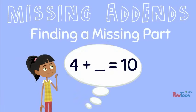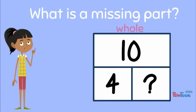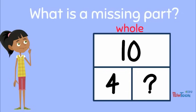Missing addends: finding a missing part. What is a missing part? This is a part-whole model. The top shows the whole or the total. The bottom shows the two parts that add together to make the whole.